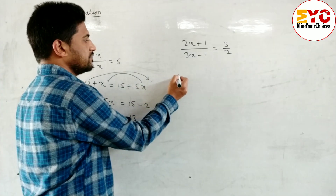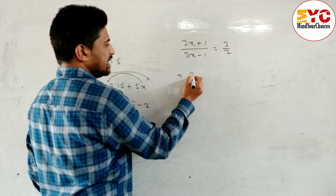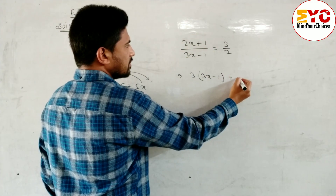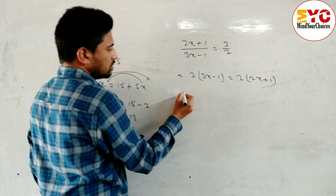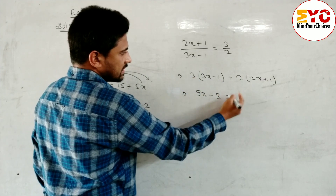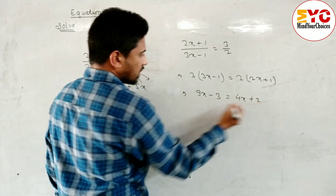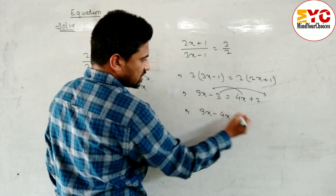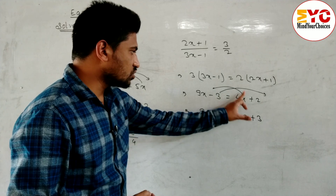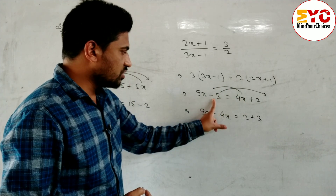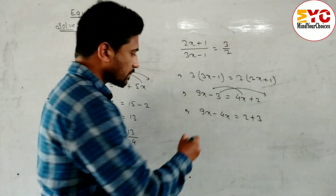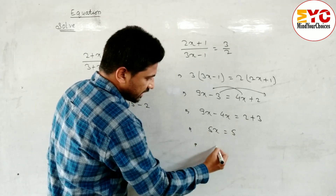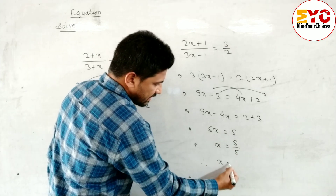Now look at next. Here also we have to cross multiply — this and this multiply, this and this multiply. So first write: 3 into (3x minus 1) equals 2 into (2x plus 1). Open the bracket: 3 into 3 is 9x, minus 3 into 1 is 3, is equal to 2 into 2 is 4x, plus 2 into 1 is 2. Now we have to arrange like terms — 4x we have to take to the front and 3 at the back. So 9x minus 4x is equal to 2, and here is minus 3 so we write plus 3. When we subtract 9 minus 4 gives 5x, is equal to 2 plus 3 is 5. Since this is in multiplication we have to divide 5 by 5. Therefore the value of x is equal to 1.